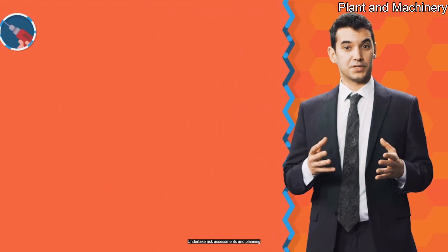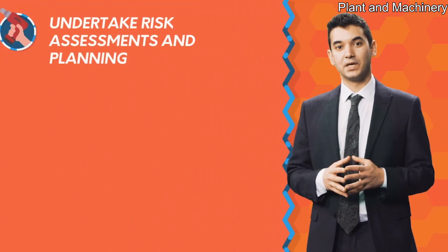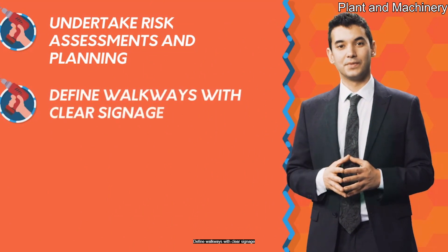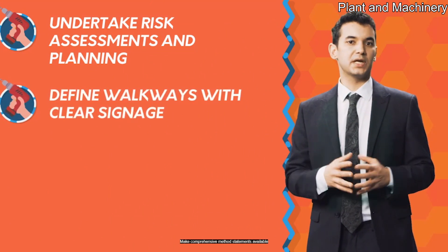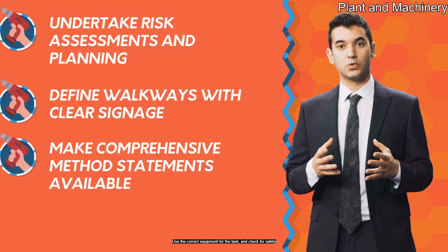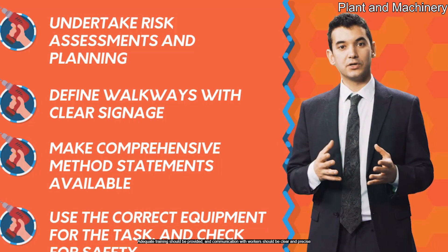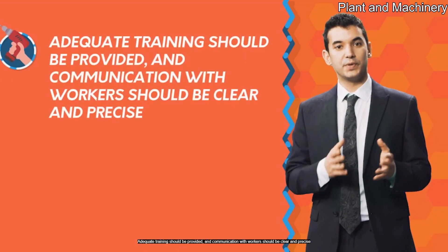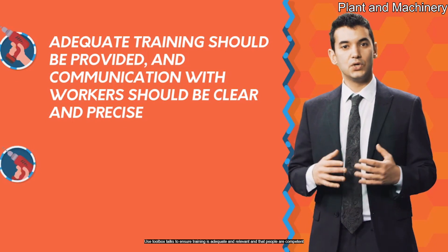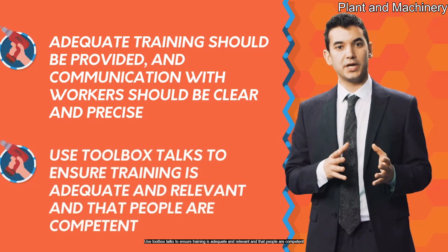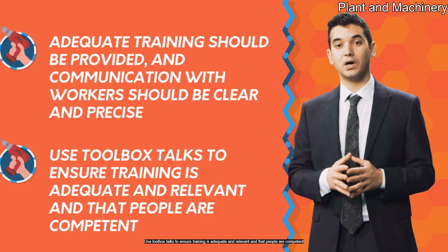Here are some useful tips on eliminating or controlling hazards around plant and machinery: undertake risk assessments and planning; define walkways with clear signage; make comprehensive method statements available; use the correct equipment for the task and check for safety; adequate training should be provided and communication with workers should be clear and precise; use toolbox talks to ensure training is adequate and relevant and that people are competent.